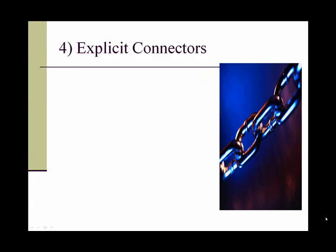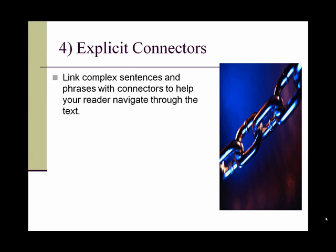Tip number four is to link with explicit connectors. We should link complex sentences and phrases with connectors to help our readers navigate through the text, so they can follow the flow of the writing smoothly and clearly see how the thoughts are joined together. Some effective connecting words are: 'for example,' 'however,' 'therefore,' and 'because.' They join sentences together so your reader knows that what you're saying now is connected to something else.